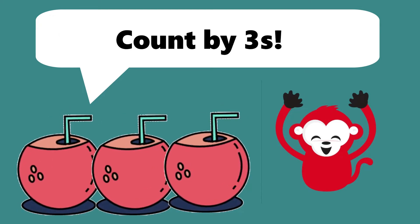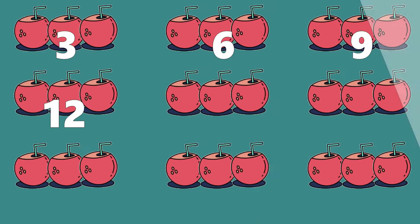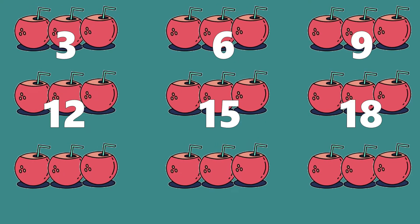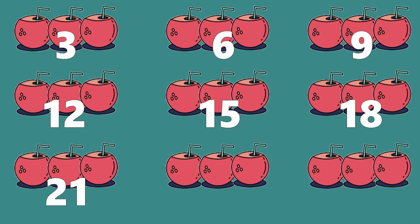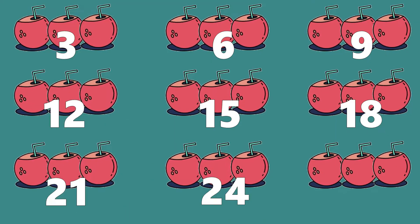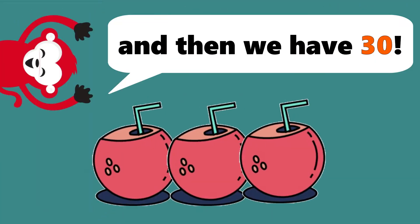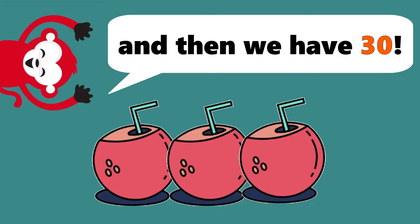Count by threes: 3, 6, 9, 12, 15, 18, 21, 24, and 27. And then we have 30.